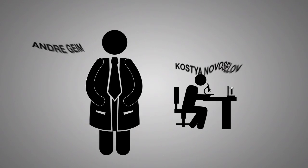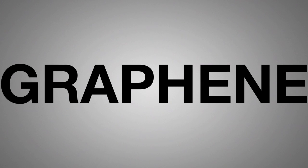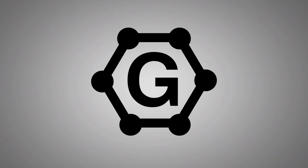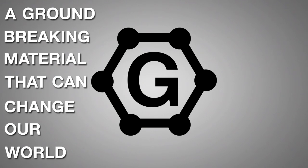In 2004, two Russian scientists used scotch tape and a graphite rock to discover graphene, a layer of atoms arranged in a honeycomb structure. Thanks to this discovery, the world was introduced to a groundbreaking material that can change our world. Here's why.